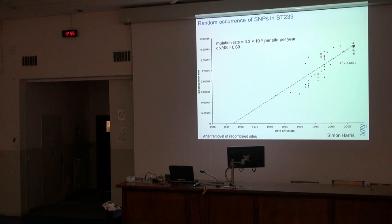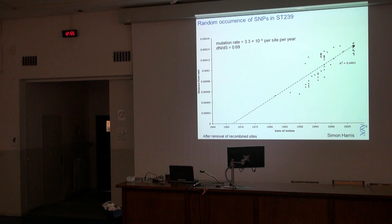We've now done this on a number of different organisms, including other Enterobacteriaceae, Salmonella, E. coli, and other Staphylococci, and we get estimates very close to this most of the time. So it appears that the accepted rate of mutation in bacterial genomes is 1,000-fold too slow.